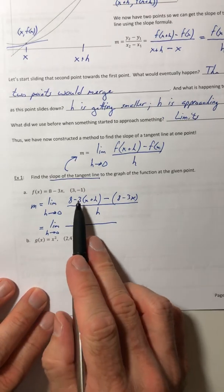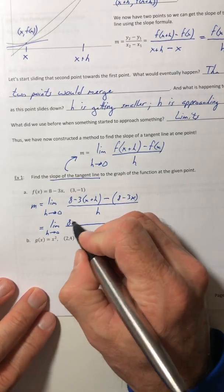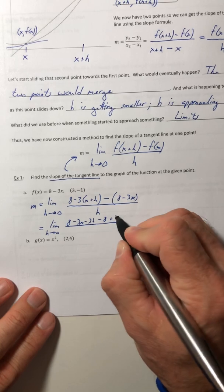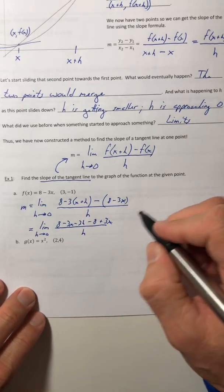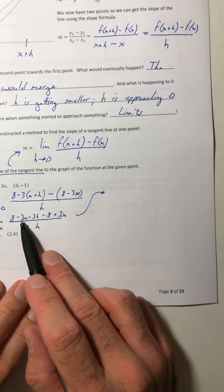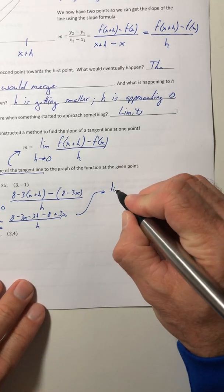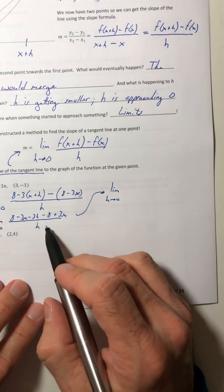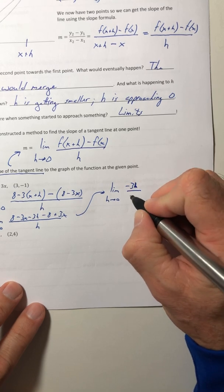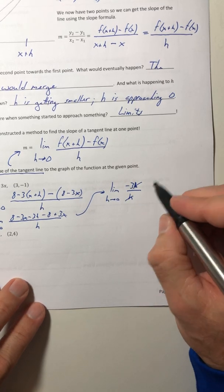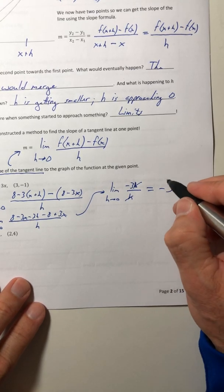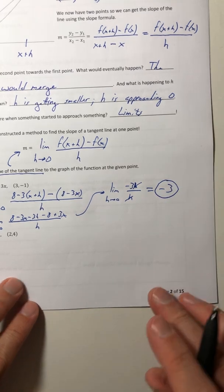Okay, so let's just distribute in the top, distribute the negative. And then keep going - so the eights cancel out, the three x's cancel out, and you're left with just negative three h over h. And the h's now cancel, and the limit or that slope is now just going to equal negative three.